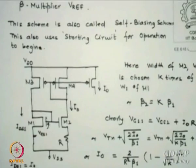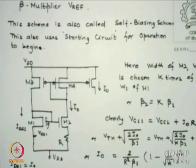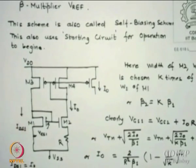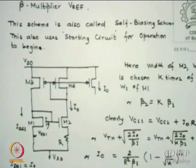There is another reference called the beta multiplier voltage reference. Something to do with betas - it also requires a startup, which is not shown here. The circuit is an identical similar form, so it will also require startup if the node does not come up properly. One P-channel mirror and one N-channel mirror connected with a Wilson-like resistor sitting in between.